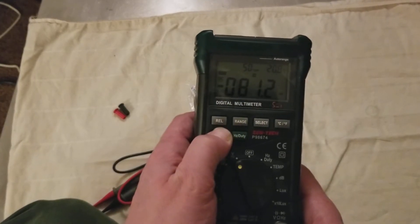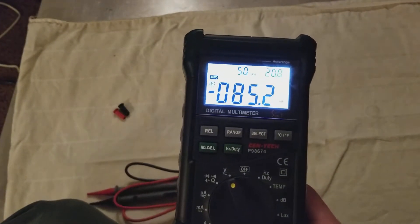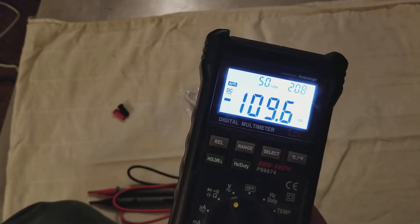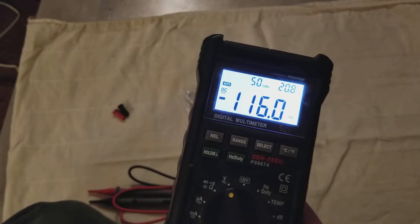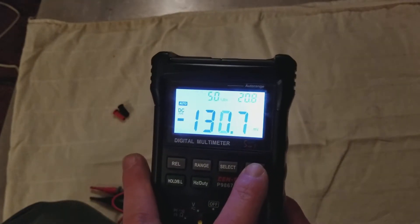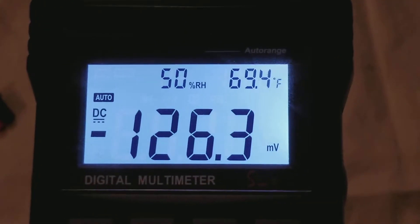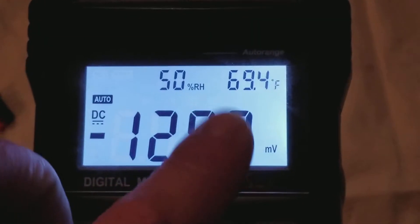It is backlit. You press and hold the data hold button. So you press and hold the data hold, and then you have to press it again to get the data hold off. And now we're just in DC millivolts. You can change it from Celsius to Fahrenheit on the display here. There we go. And then there's your relative humidity.